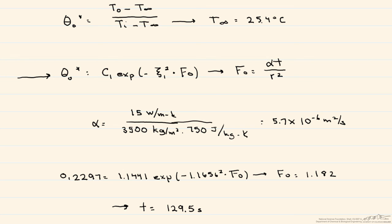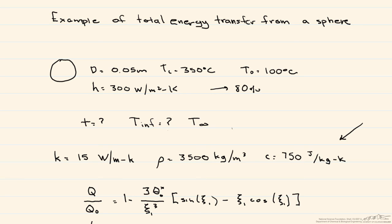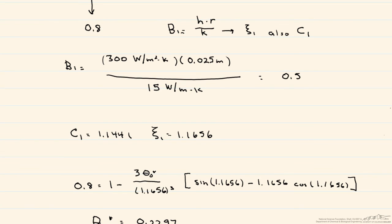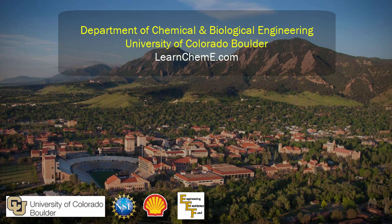To summarize: any time you need to find how long it takes or what bath temperature is required to remove a percentage of thermal energy, you must use the fraction of total energy transferred expression — here shown for the sphere, though similar expressions exist for the plane wall and cylinder. This gives you theta star 0, which in turn provides a lot of different information including bath temperature and time.